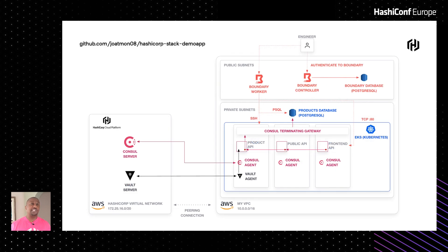Now we can bring all these controls together into a bigger architecture diagram. We've added Vault, managed by HashiCorp via HCP, with the Vault sidecar injector running on all EKS nodes — that's how we control machine authentication and authorization. We've added Consul via HCP as well, with Consul agents on each EKS node for machine-to-machine access. And we've added Boundary in our public subnet — this is how humans connect to our private infrastructure.